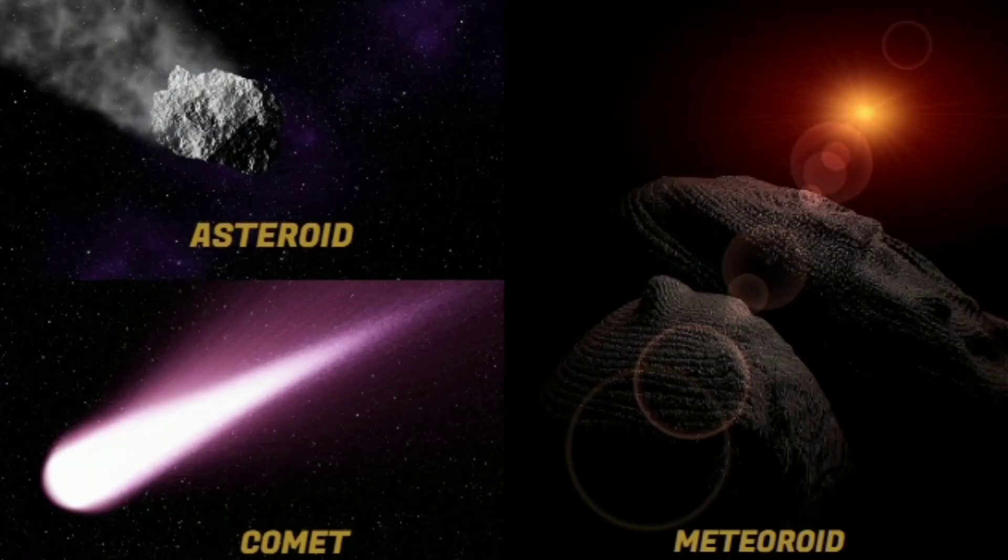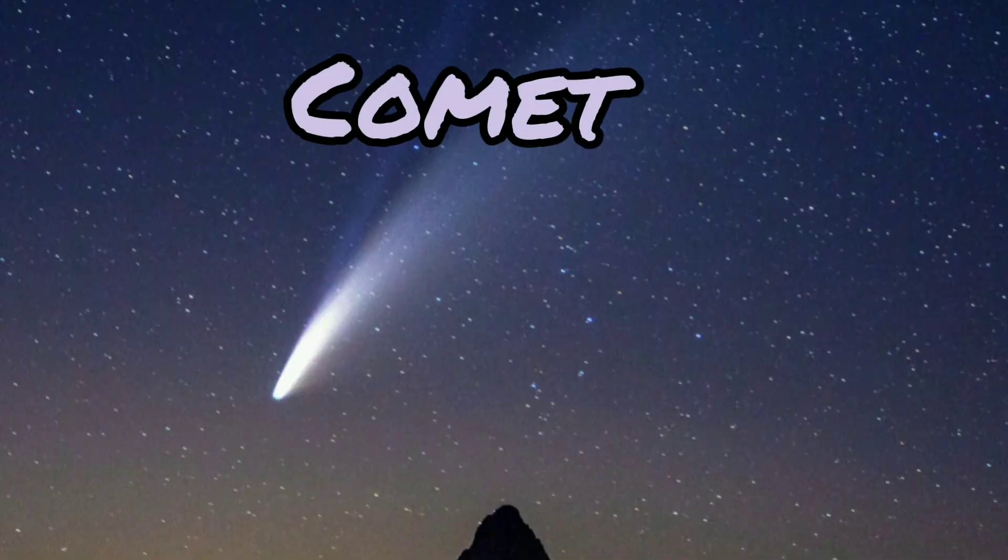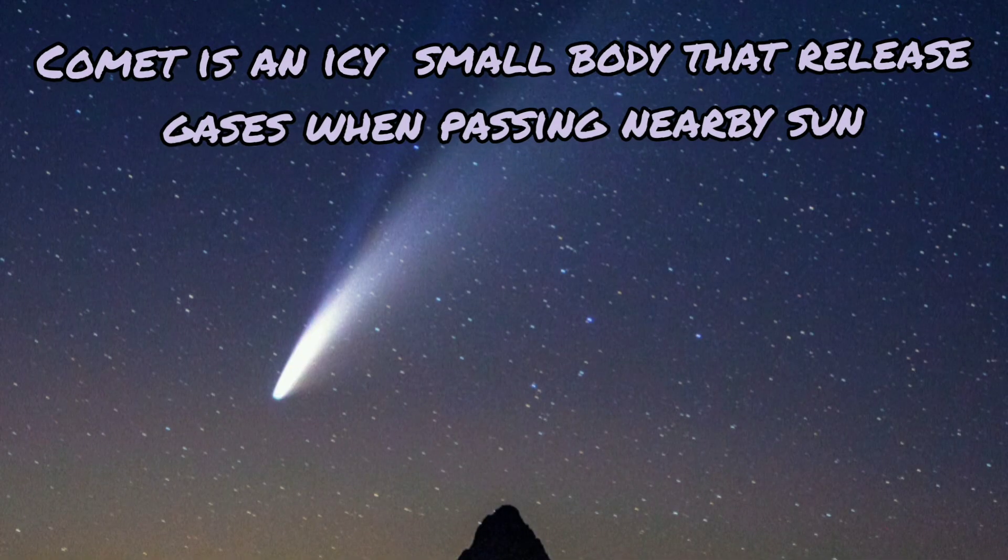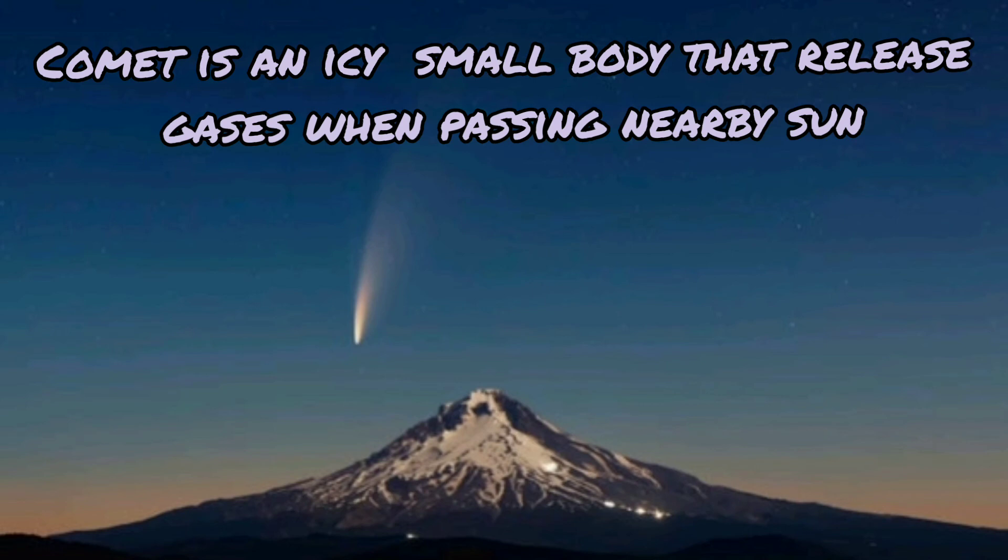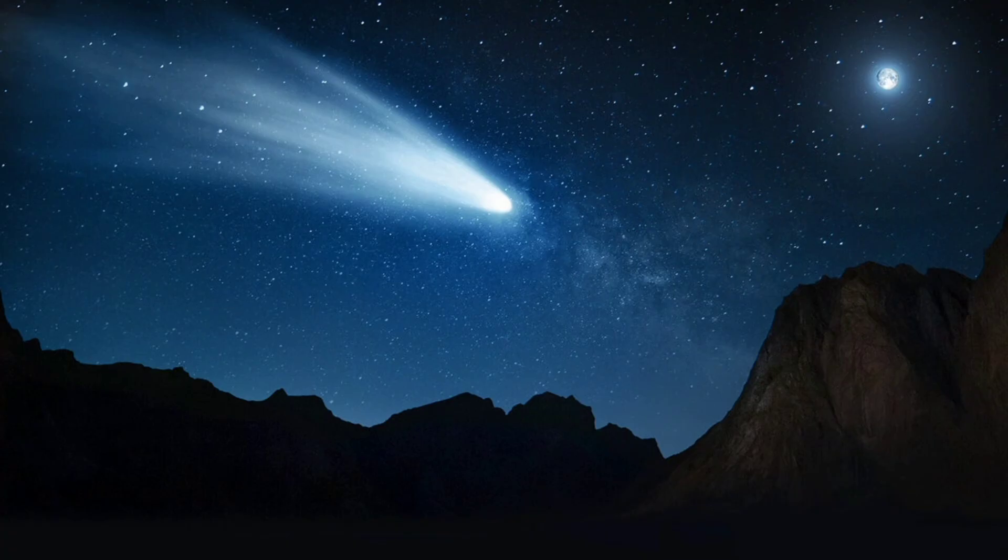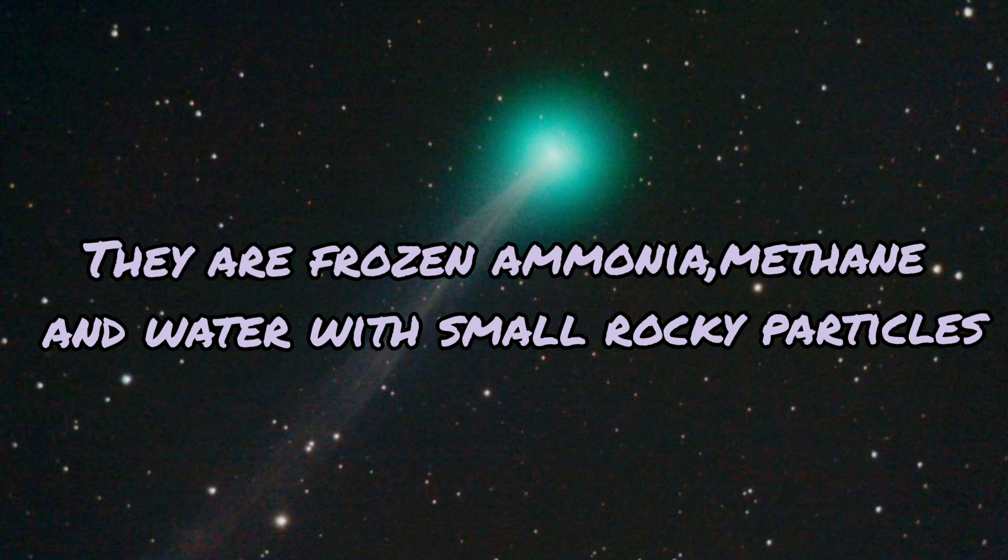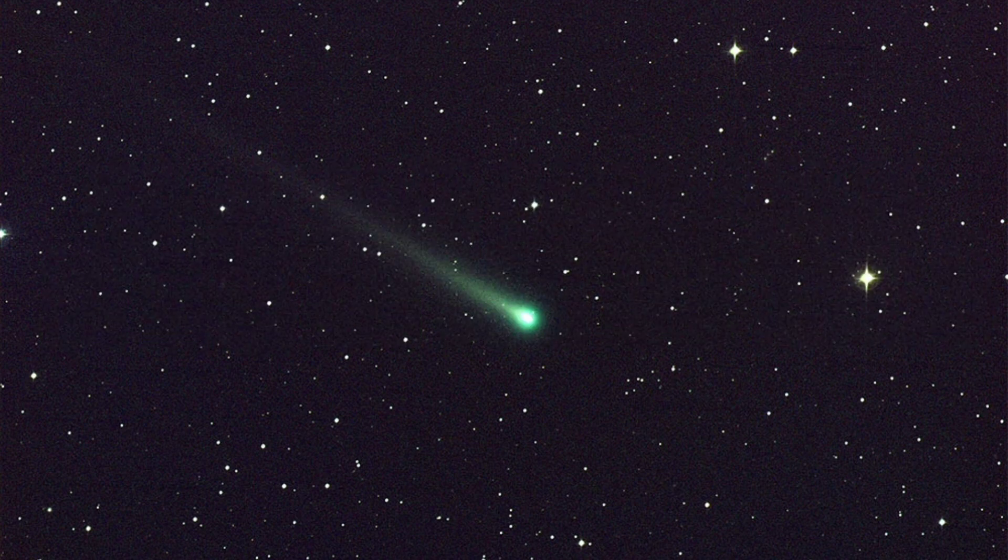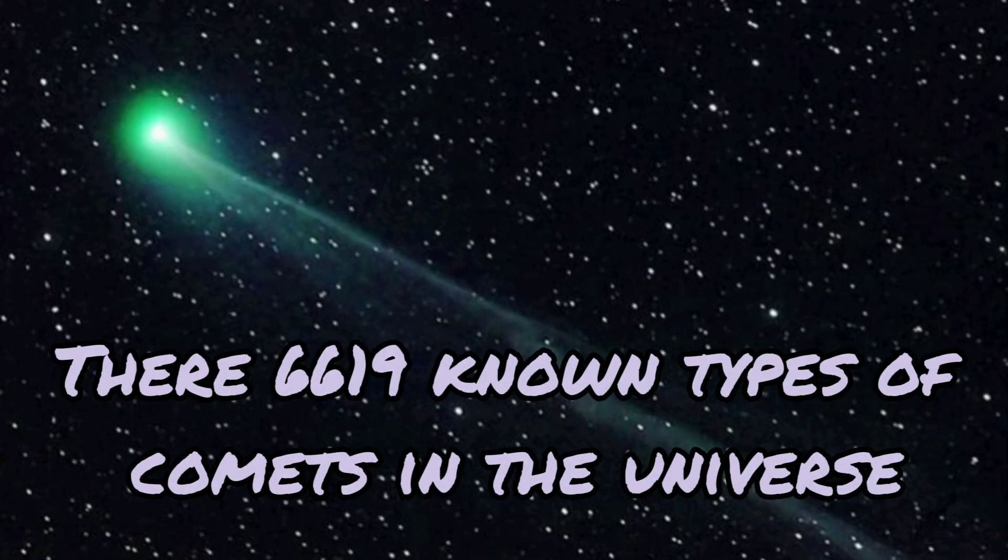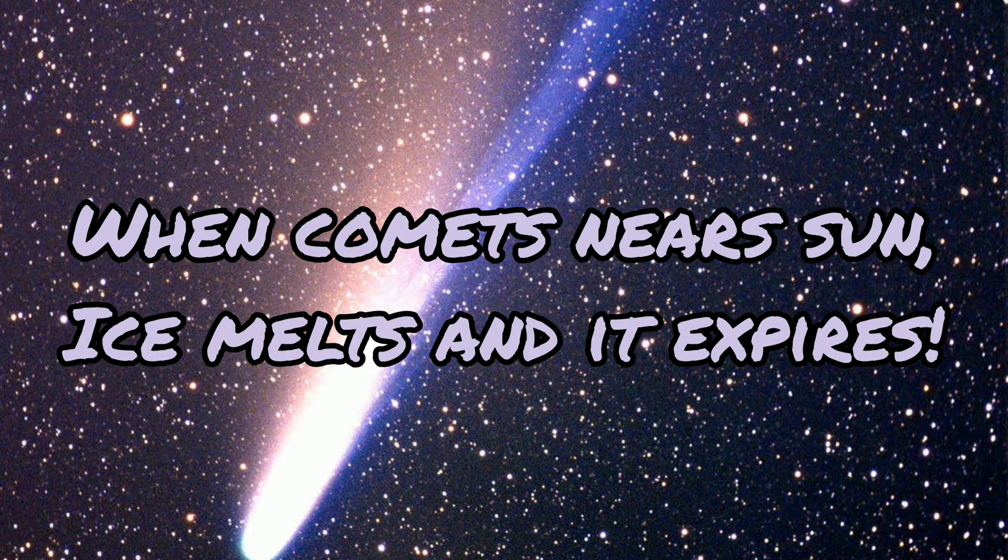Next type of small body present in the solar system is comet. Comet is an icy small body that will release gases when passing a nearby sun. Comets are frozen ammonia, methane or water and contain small amount of rocky material. There are 6619 unknown comets in the solar system. Once it orbits near sun, the ice melts and it expires.